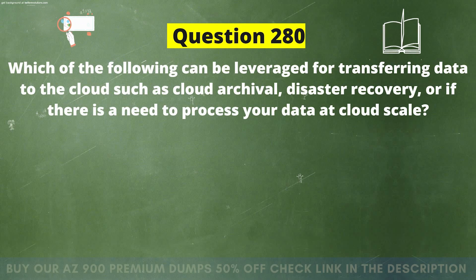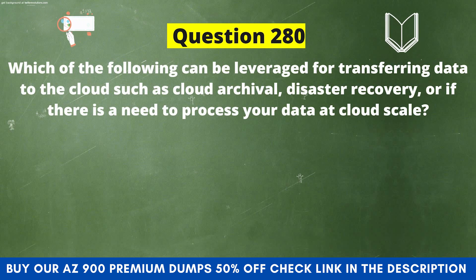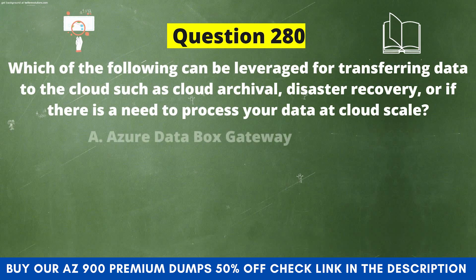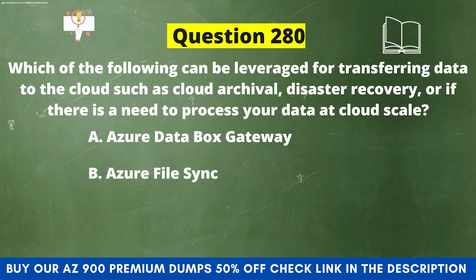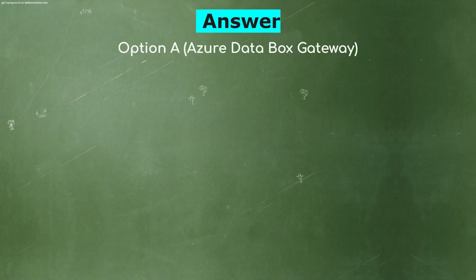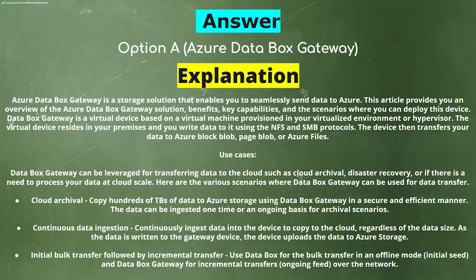Next question: Which of the following can be leveraged for transferring data to the cloud, such as cloud archival, disaster recovery, or processing data at cloud scale? The options are: A) Azure Data Box Gateway, B) Azure File Sync, C) Azure Cosmos DB, D) Azure Arc. The correct answer is option A, Azure Data Box Gateway.